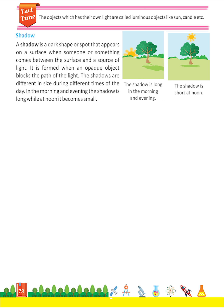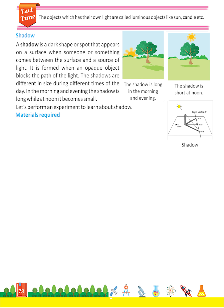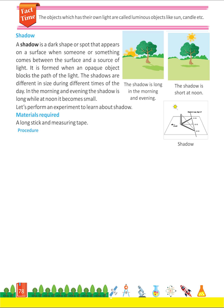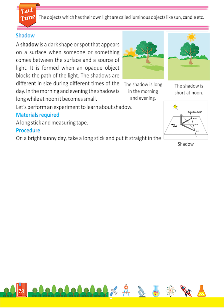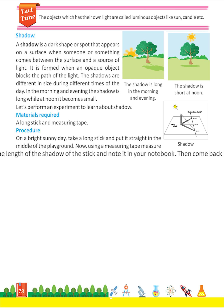The shadow is long in the morning and evening, and short at noon. Let's perform an experiment to learn about shadow. Materials required: a long stick and a measuring tape. Procedure: on a bright sunny day, take a long stick and put it straight in the middle of the playground. Now, using a measuring tape, measure the length of the shadow of the stick and note it in your notebook.